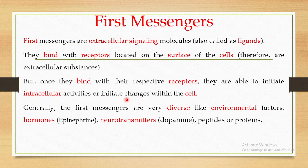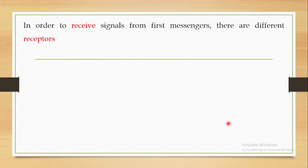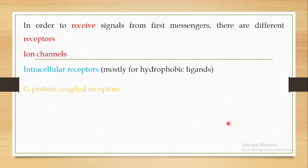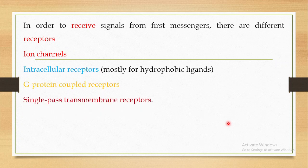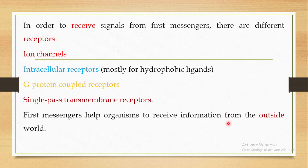I told you that these first messengers are very diverse — the first messenger can be environmental factors like hormones, neurotransmitters, peptides, or proteins. Then I told you that there are a variety of receptors present on the surface of cells to receive these first messengers, like ion channels, intracellular receptors, G protein-coupled receptors, and single-pass transmembrane receptors. These first messengers help the organism receive information from the outside world.